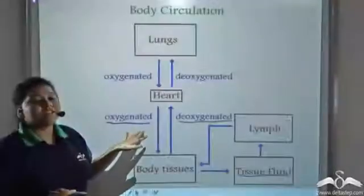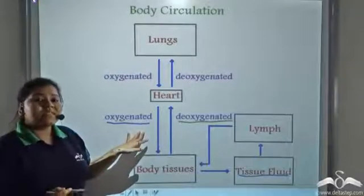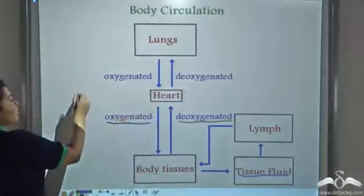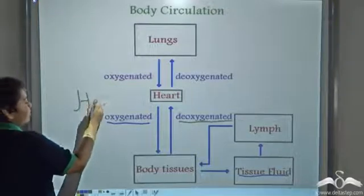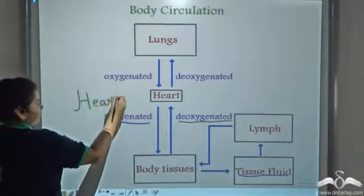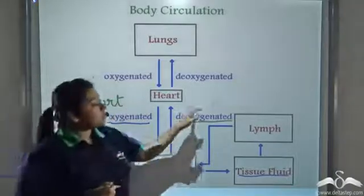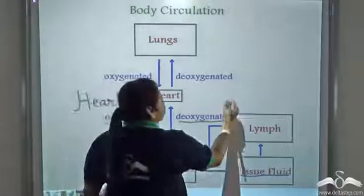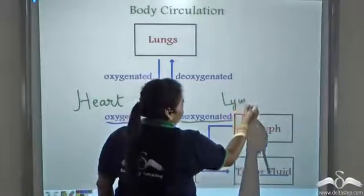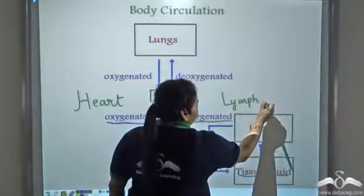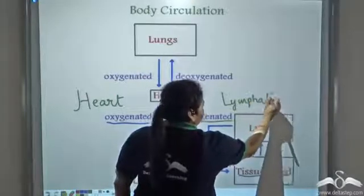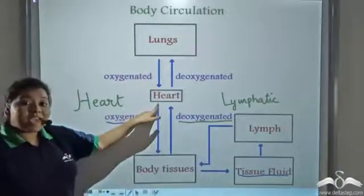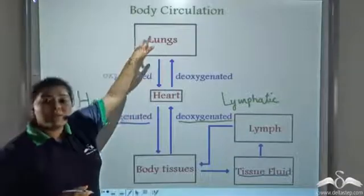This is the entire circulation. The body circulation consists of the circulation via the heart and also the circulation via the lymphatic vessels. Together, the lymphatic circulation and the circulation via the heart form the body's complete circulation.